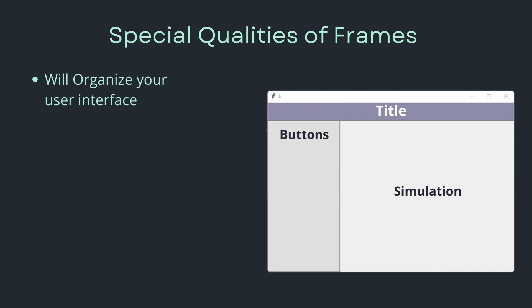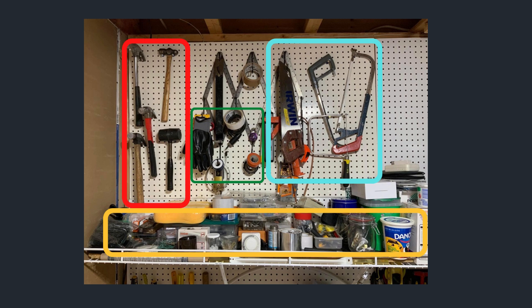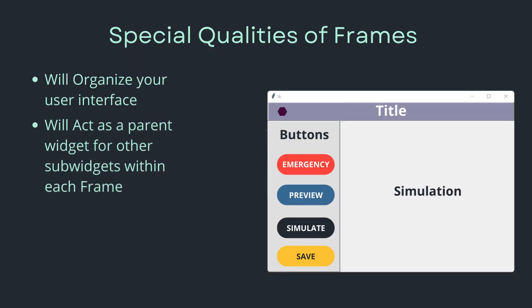A frame has many special qualities. First, it's going to organize your user interface. As you can see in this other GUI I coded, there needs to be a flow in your app — it needs to be easy to understand and well organized. You can see there's one frame at the top for the title in purple, another on the left for buttons, and a larger one on the right for the simulation. Going back to our analogy, those colored squares on the tool wall can actually be compared to frames.